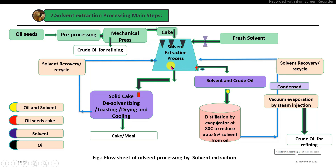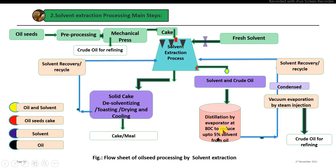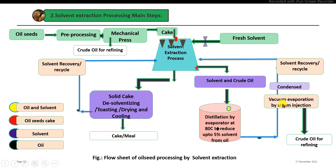After extraction of oil from the oil seeds, the solvent and oil are separated by a distillation process using a single-effect evaporator, heating to 80 degrees Celsius to reduce the solvent content in the oil to 5 percent. Then vacuum evaporation with direct steam injection heats to 110 degrees Celsius. The solvent vapors released are condensed in a condenser, then purified and recirculated in the system.